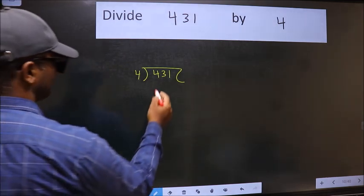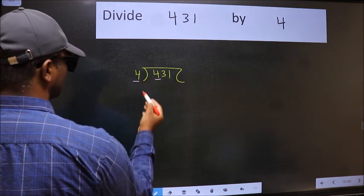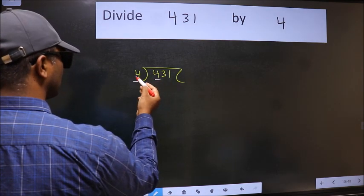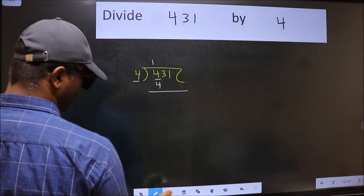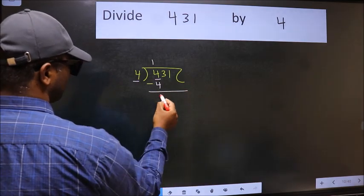Next, here we have 4 and here also 4. When do we get 4 in the 4 table? 4 ones, 4. Now, we should subtract. We get 0.